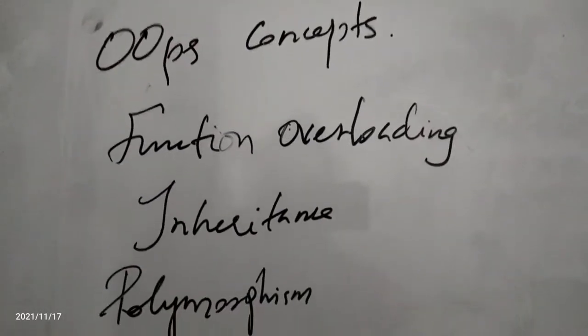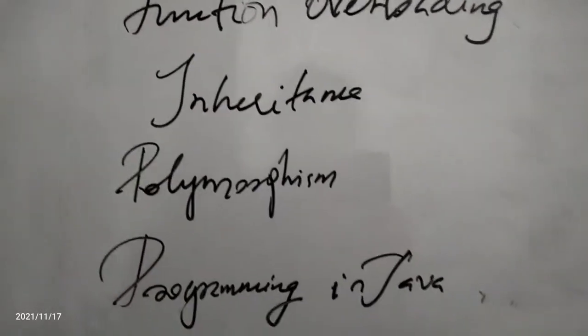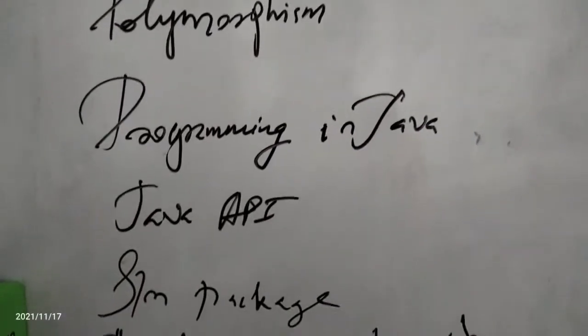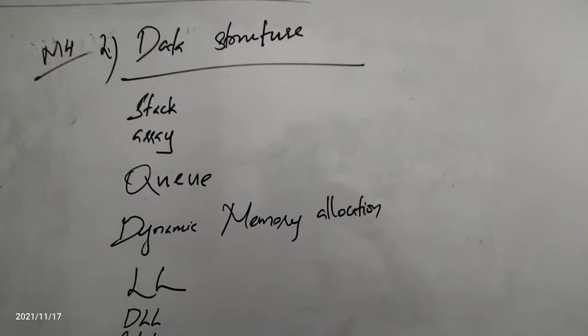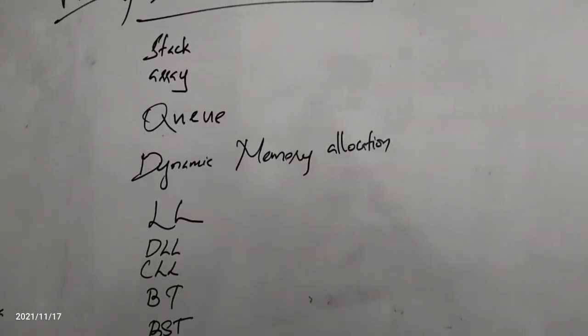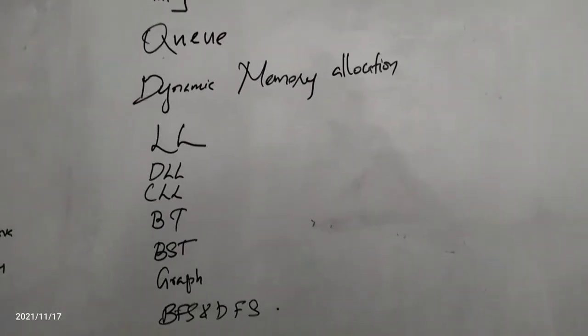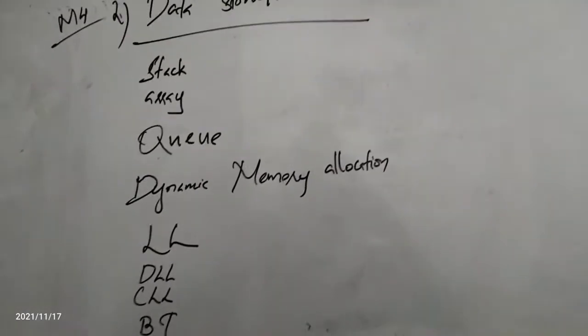OOP covers basic concepts, function overloading, inheritance, and polymorphism. Programming in Java includes Java API, system packages, threads, file streams, string classes, and applet programming. Data structures covers stack, array, queue, dynamic memory allocation, linked list, binary tree, binary search tree, graph, BST, and FST.